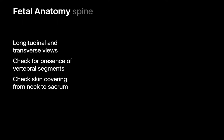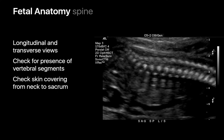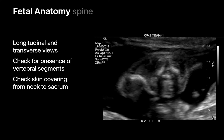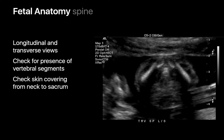Next, we assess the fetal spine. We check that each vertebral segment is present and appears normal, and we confirm that the entire length of the spine is covered by skin. To do this, we evaluate the cervical, thoracic, and lumbar spine from a sagittal perspective and also orthogonally in the axial plane.